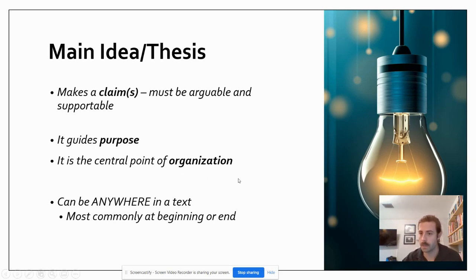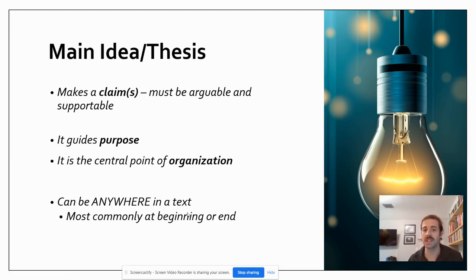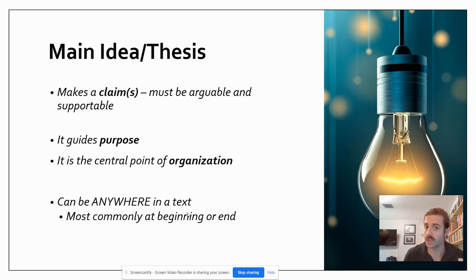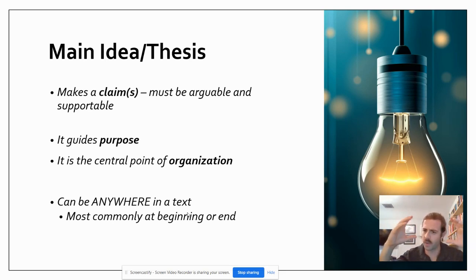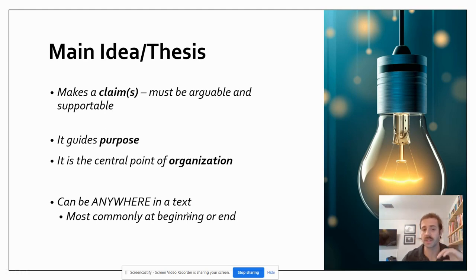These main ideas guide the whole reason why we are reading or building an argument, and they become the central point of organization. As a side note, main ideas can be anywhere in the text, especially in more complex texts where authors break traditional molds. In academics, there is a formulaic approach — you organize your main idea toward the beginning of your paper — but we'll look at examples where it isn't at the beginning. The author isn't doing it wrong; the author is just doing it differently.